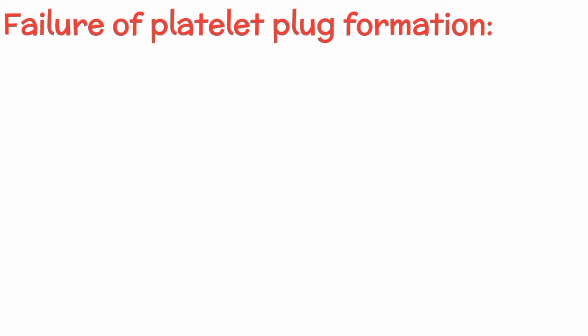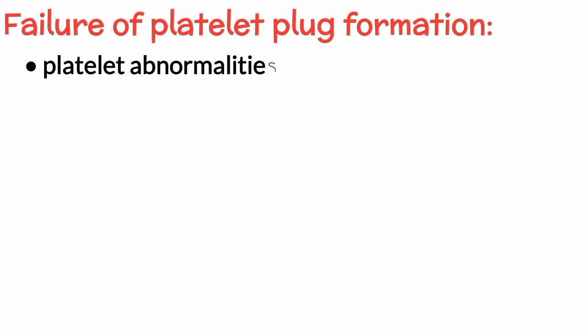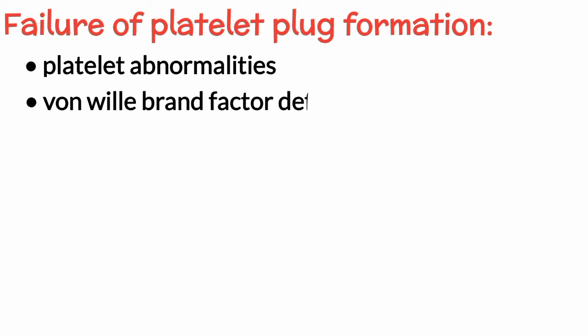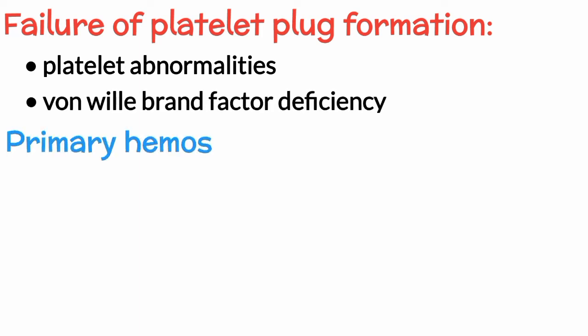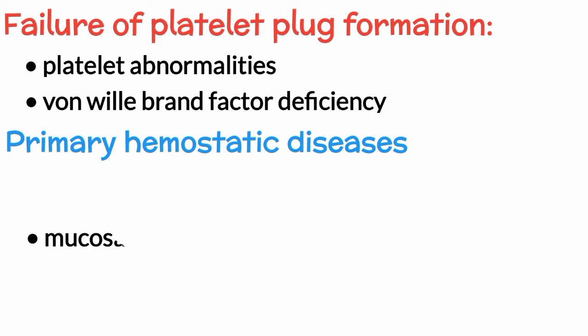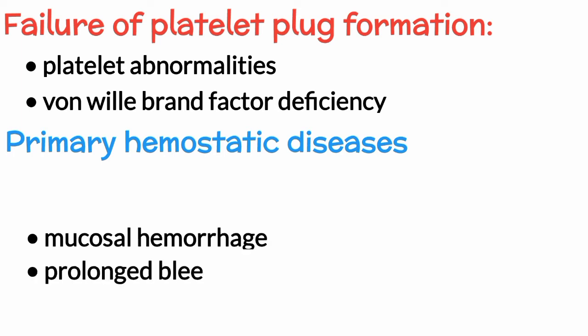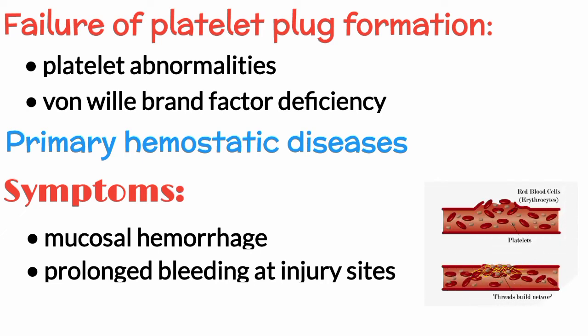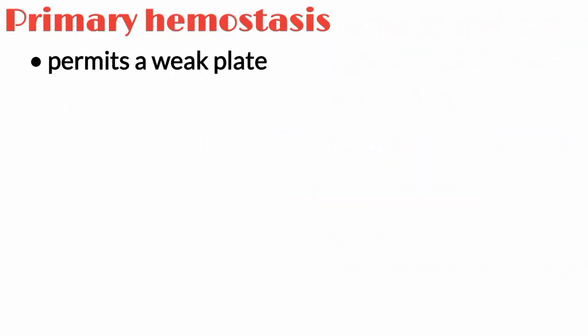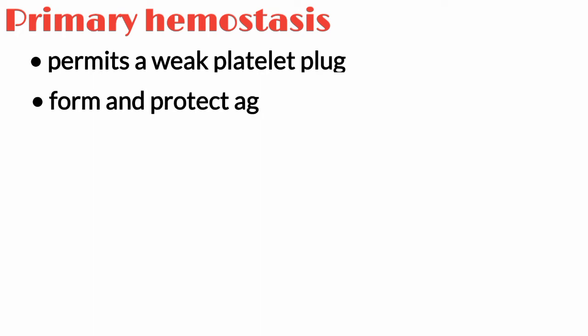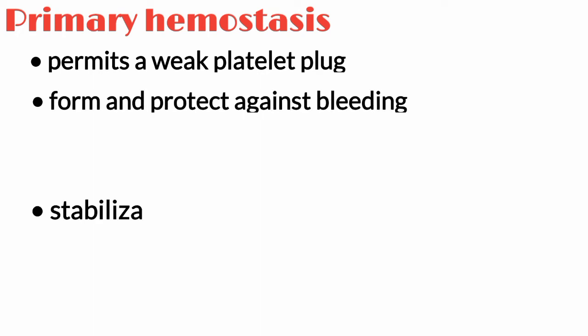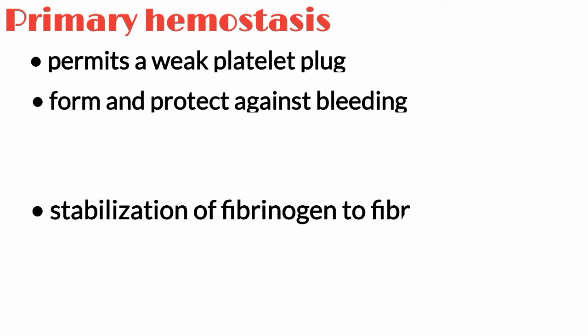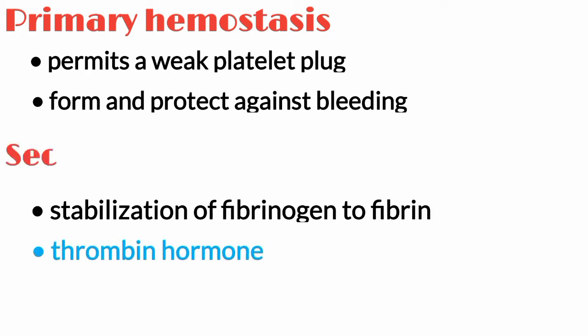Failure of platelet plug formation due to quantitative or qualitative platelet abnormalities, or Von Willebrand Factor deficiency, causes primary hemostatic diseases. Mucosal hemorrhage and prolonged bleeding at injury sites are all symptoms of primary hemostatic disorders. Furthermore, primary hemostasis permits a weak platelet plug to form and protect against bleeding until further stabilization of fibrinogen to fibrin via thrombin occurs in secondary hemostasis.